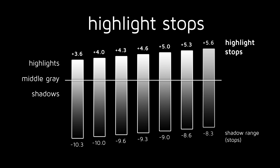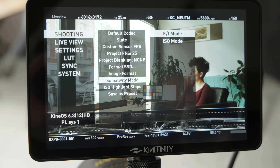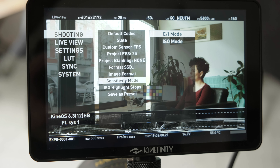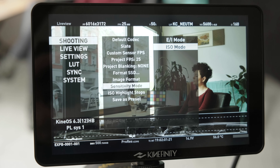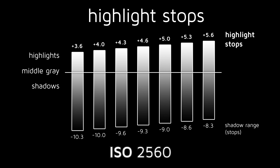Whatever's left of the Mavo's more than 14 stops of dynamic range is then assigned to the shadows. Remember, highlight stops is only available in ISO exposure mode. The benefit to using ISO mode is that no matter which sensitivity you choose, your highlight stop setting will stay the same.